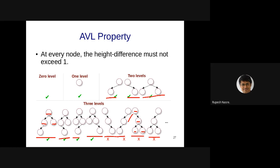Now that we understand the AVL property, let's use it for insertions, removals, and searching. Searching is easy — it follows BST traversal as before. The bound is still O(height), but now height is O(log n), so search complexity improves.